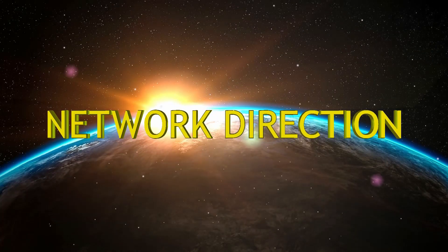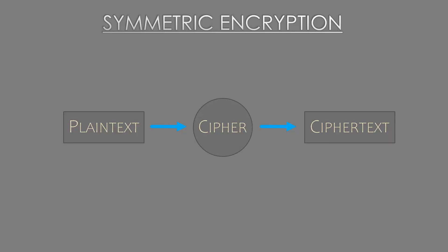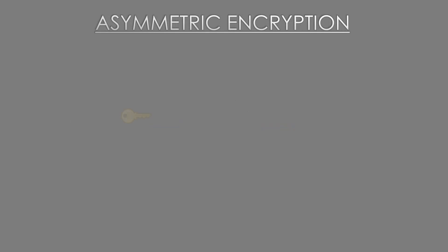If you've been with me for the last two videos, you'll know about a type of encryption called symmetric encryption. This is where we have a secret key and we use a cipher to encrypt some private information. We can then use the same key to decrypt later on.